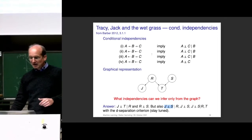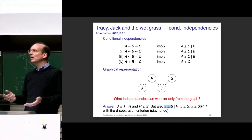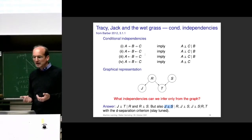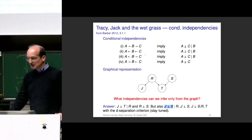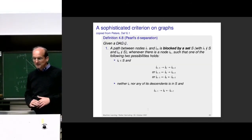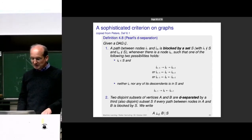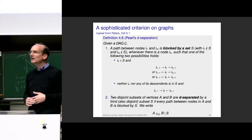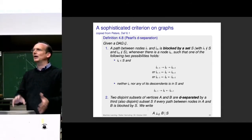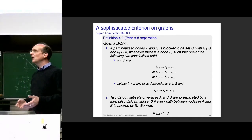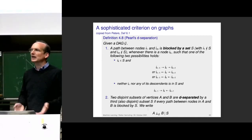This can be generalized with the so-called d-separation criterion. The d-separation criterion is a bit of a monster definition — it looks complicated — so we go through it step by step. It's maybe the most advanced stuff I will tell you about Bayesian networks in this lecture, but it's super useful if you understand it. You can make nice exercises with it.